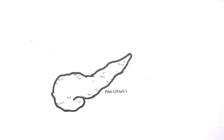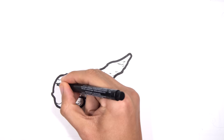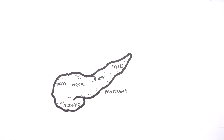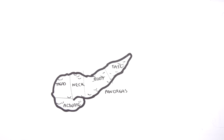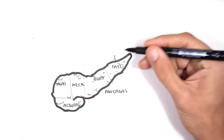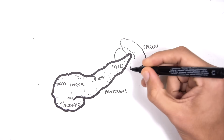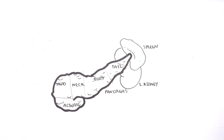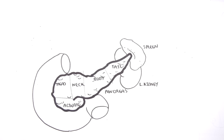The pancreas can be divided into a few parts: the head, neck, body, and tail. The tail of the pancreas tickles the spleen, and behind the pancreas sits the left kidney.